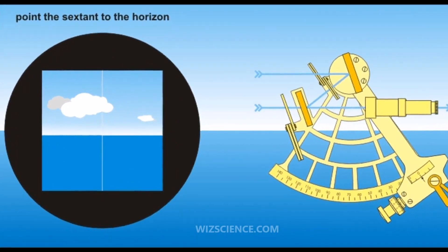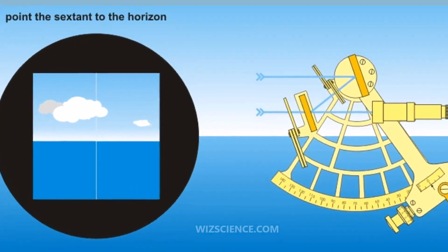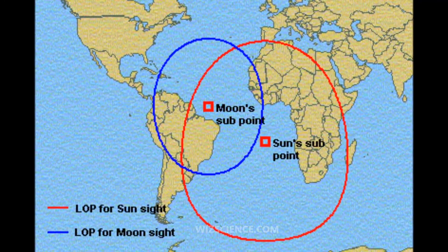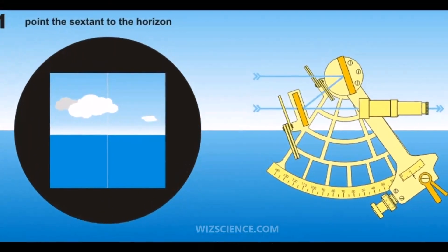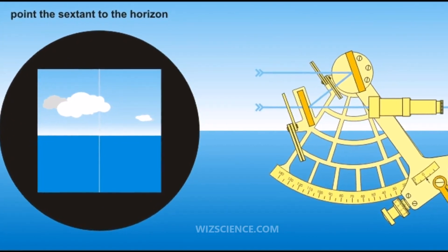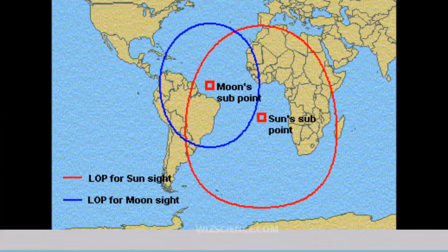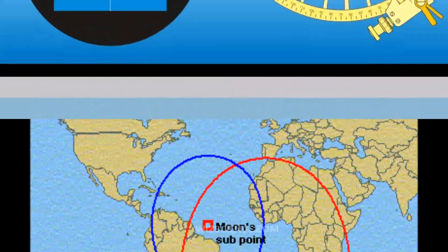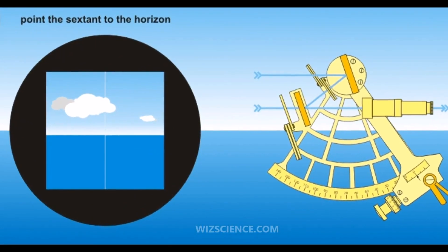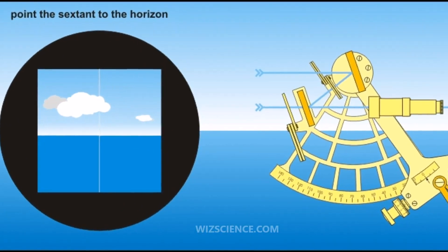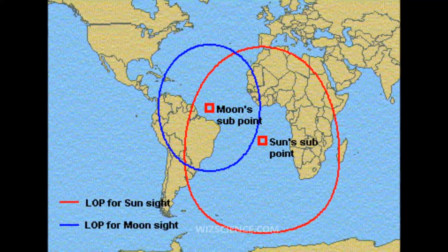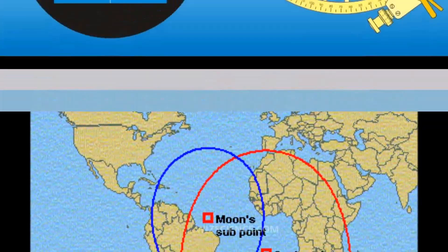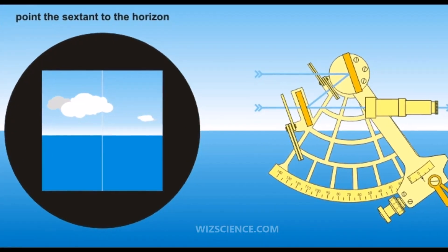Celestial navigation is the use of angular measurements between celestial bodies and the visible horizon to locate one's position on the globe, on land as well as at sea. At a given time, any celestial body is located directly over one point on the Earth's surface. The latitude and longitude of that point is known as the celestial body's geographic position, which can be determined from tables in the nautical or air almanac. The measured angle between the celestial body and the visible horizon is directly related to the distance between the celestial body's geographic position and the observer's position.